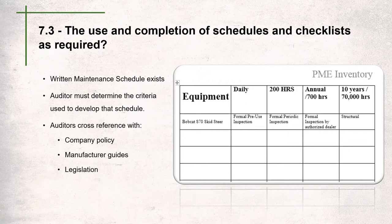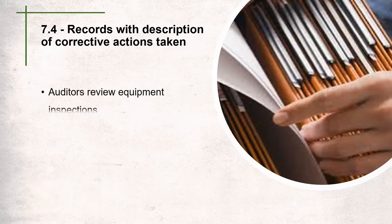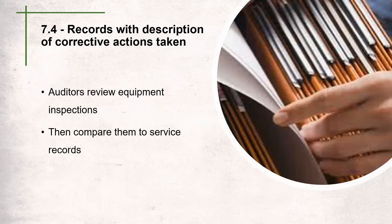Question 7.4 is about records with descriptions of corrective actions taken. Auditors will review daily, monthly, periodic, or annual inspection records and tool inspections. From these, the auditor will determine what should have been done and compare that to actual service records from the company. Preventative maintenance is generally a paperwork-heavy section — there's a lot that needs to be included, and this is an area where advisory services can help ensure everything is in place.